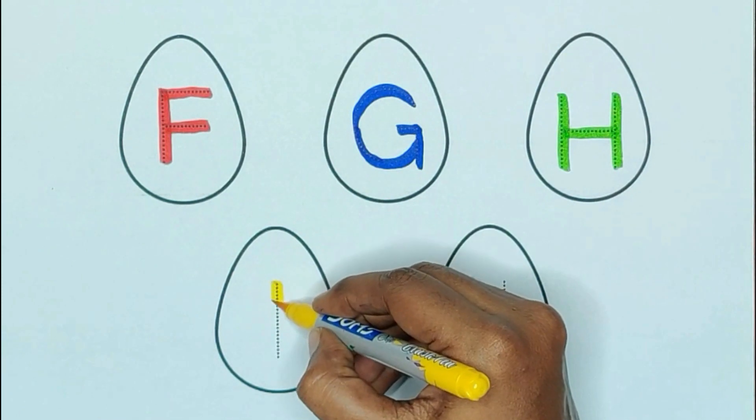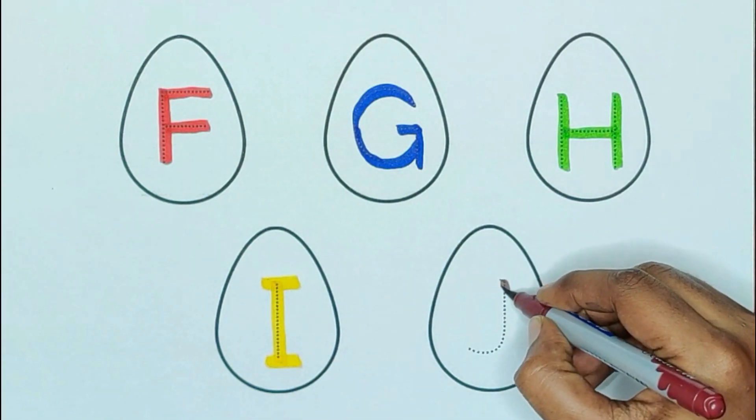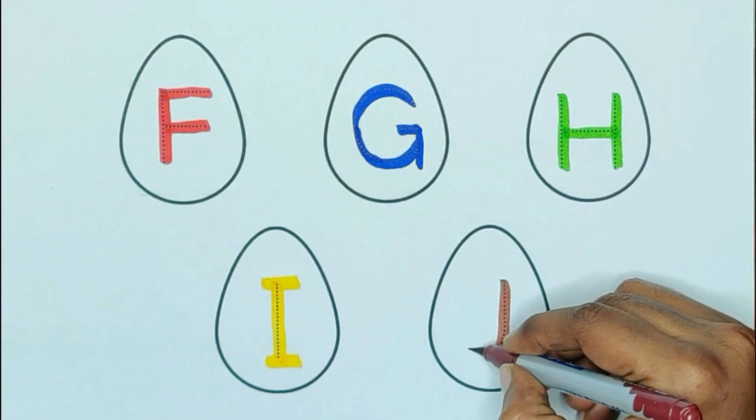Yellow color, I. I for impala. Brown color, J. J for jackfruit.